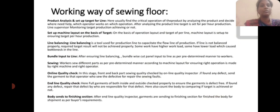Working way of sewing floor — product analysing and set up target for line: find the critical operation of the product. By analysing the product and where help is needed, the operator works on that operation. After analysing the product, the line target is set for the production line. The supervisor monitors whether the target production is achieved or not.